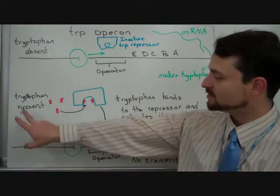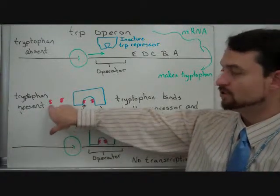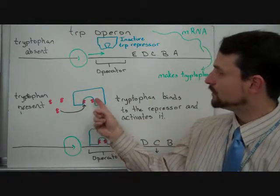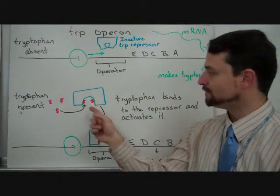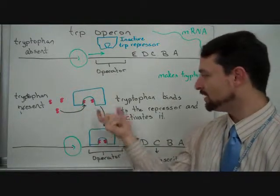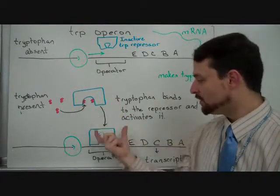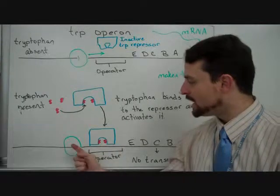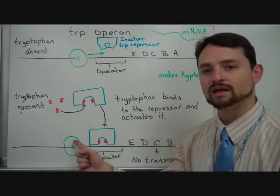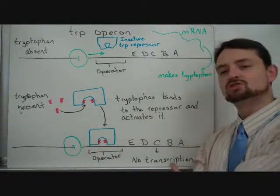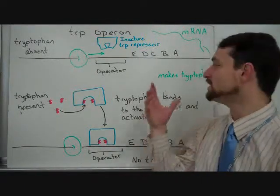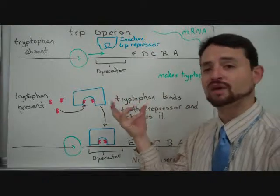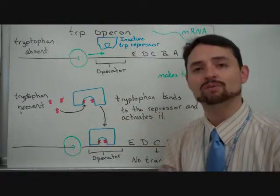When tryptophan is present, that's these little red molecules here, they will bind to the repressor, and that will change its shape. Notice the difference in the shape. That repressor will then, because now it's activated, will then bind to the operator, and that will keep RNA polymerase from transcribing these enzymes, because the cell already has tryptophan. So, why would you want to make enzymes to make tryptophan, if tryptophan is already present?